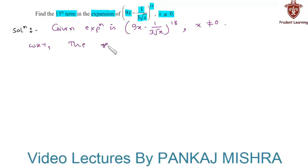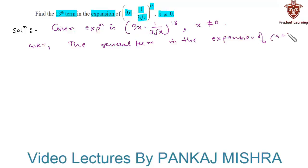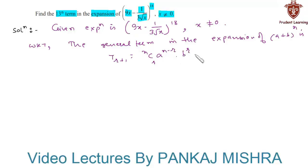We know that the general term in the expansion of (a plus b) whole raise to n is given by T(r+1) equals n C r into a raise to (n minus r) into b raise to r. Therefore, the general term for the given expression is T(r+1) equal to: